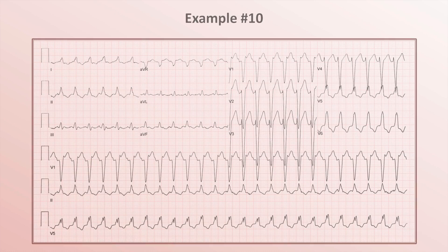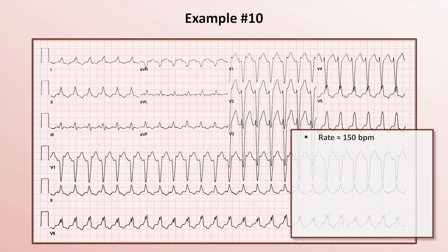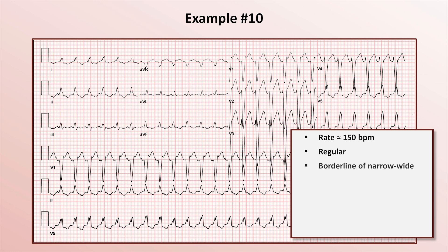Finally, example 10. The rate is about 150, and it's regular. Regarding the QRS complex width, it's just at 120 ms, straddling the border of narrow or wide complex.